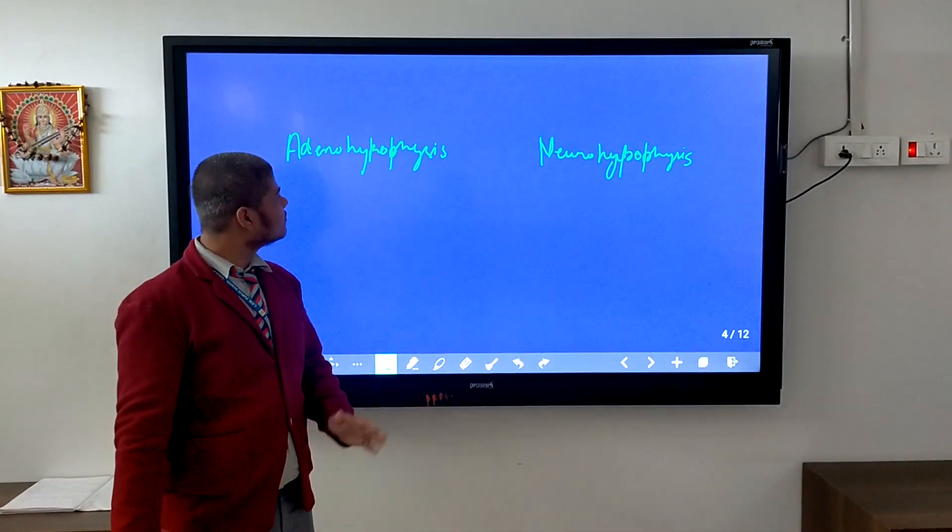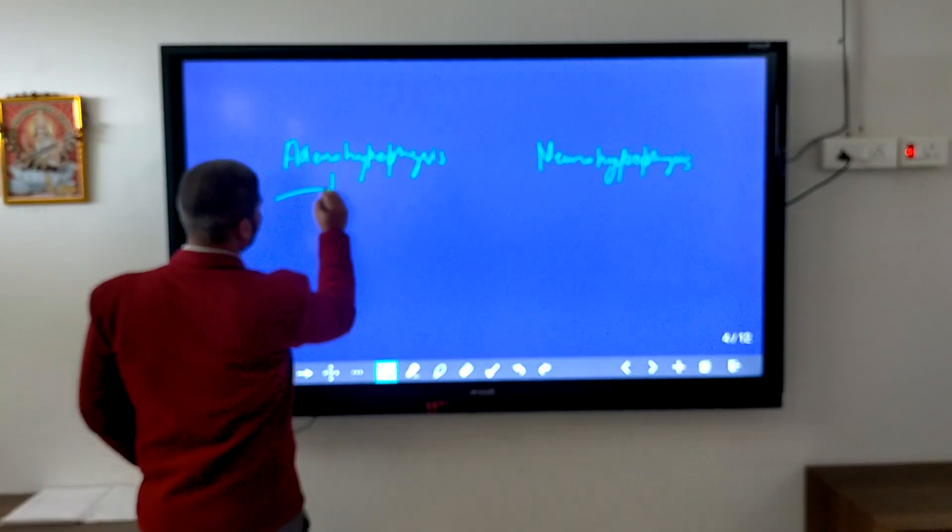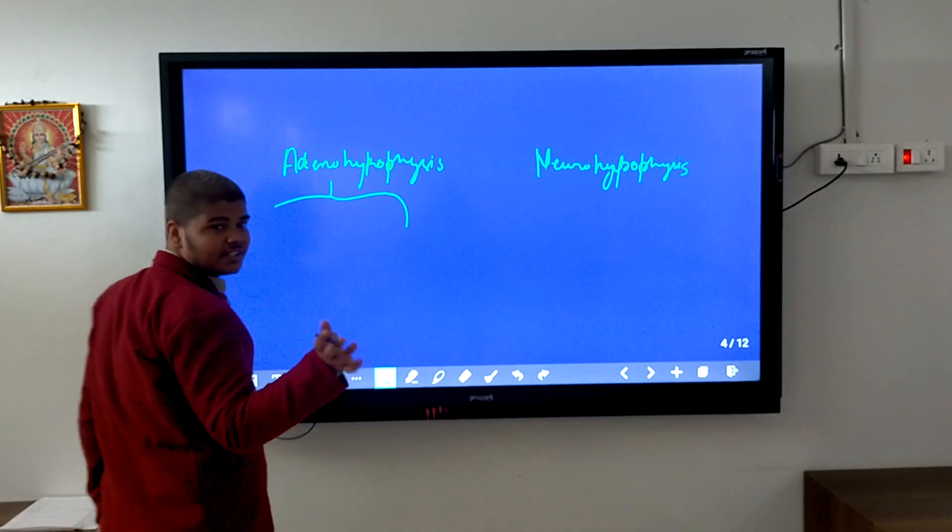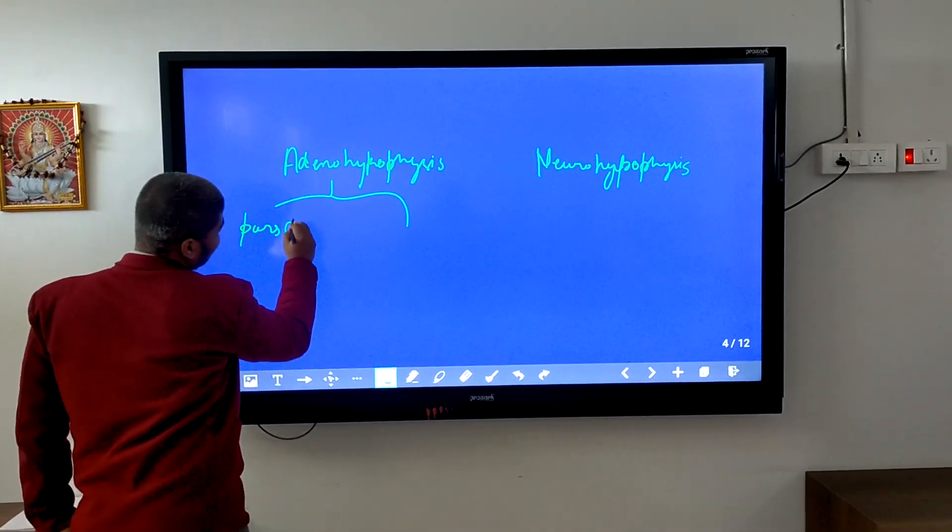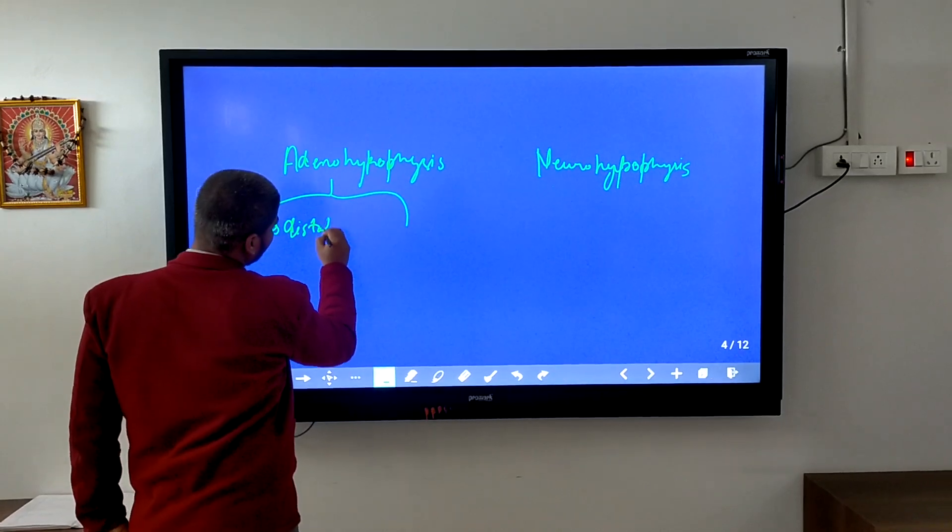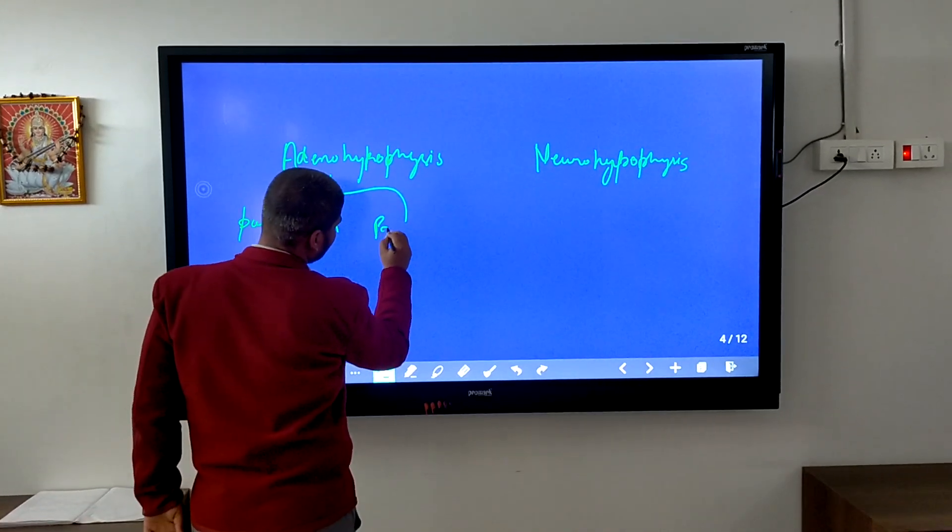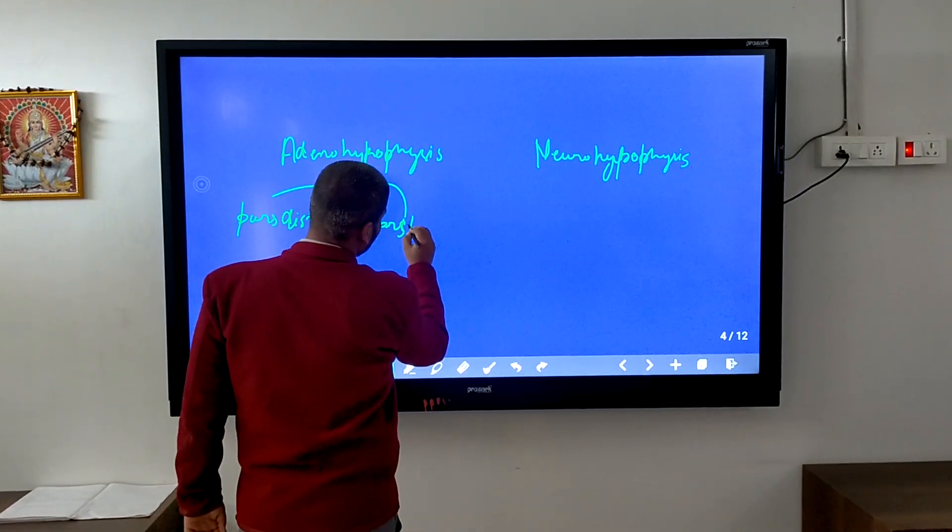The adenohypophysis has two parts. First is pars distalis, and the second one is pars intermedia.